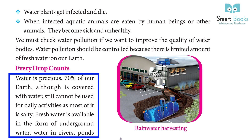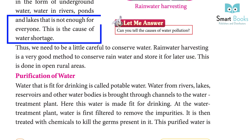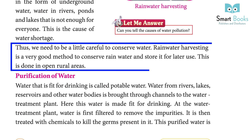Fresh water is available in the form of underground water, water in rivers, ponds and lakes, but that is not enough for everyone. This is the cause of water shortage. Rainwater harvesting is a very good method to conserve rainwater and store it for later use.